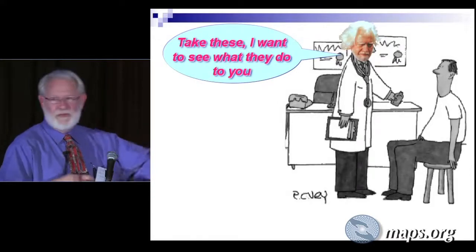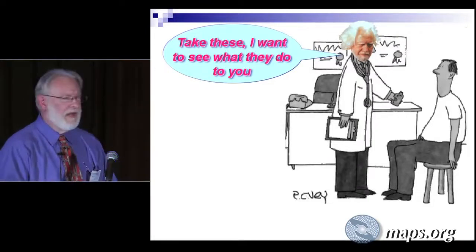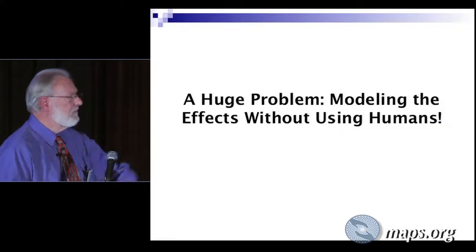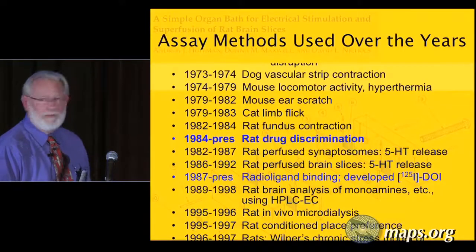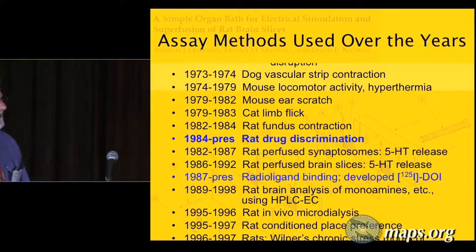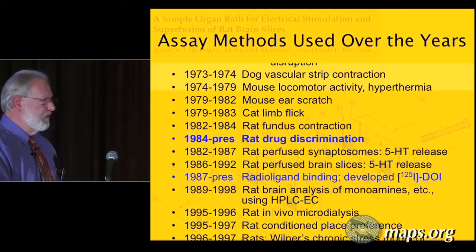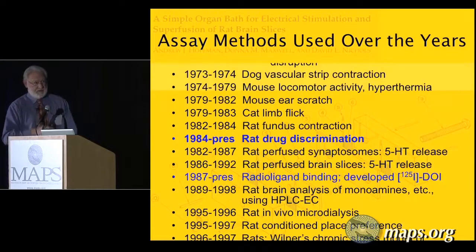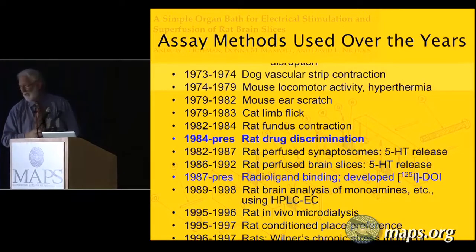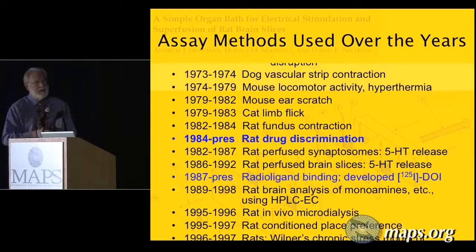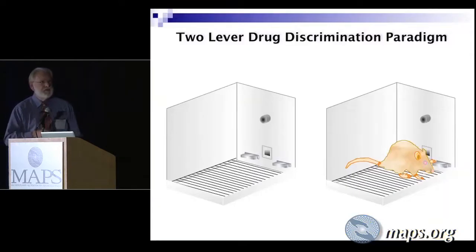How do I study psychedelics? Over the years I've used many different techniques: conditioned avoidance response disruption as a graduate student, smooth muscles from dog vascular strips, mouse locomotor activity, cat limb flick, rat drug discrimination, radioligand binding — we developed I-125 DOI as a radioligand — locomotor activity in rats, measurement of signals, and computer models of serotonin 2A receptors. All of that has led to drug discrimination as probably the best model for this work.